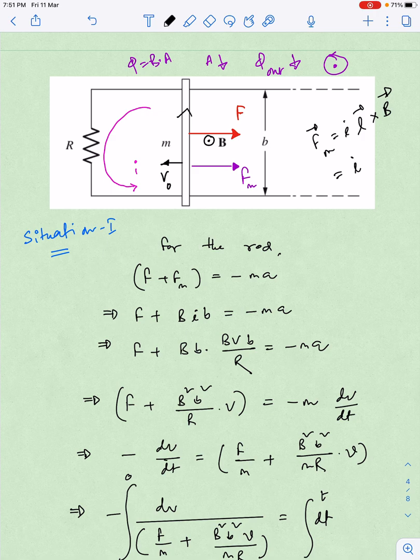If I apply I L cross B, L is in that direction, that is along j cap, so I L j cap cross B k cap. J cross K is i, so I L B i cap, meaning the magnetic force will be acting in the rightward direction. The external force was also acting rightward, and both these forces will brake the rod. After a certain point of time, the rod will eventually come to rest.